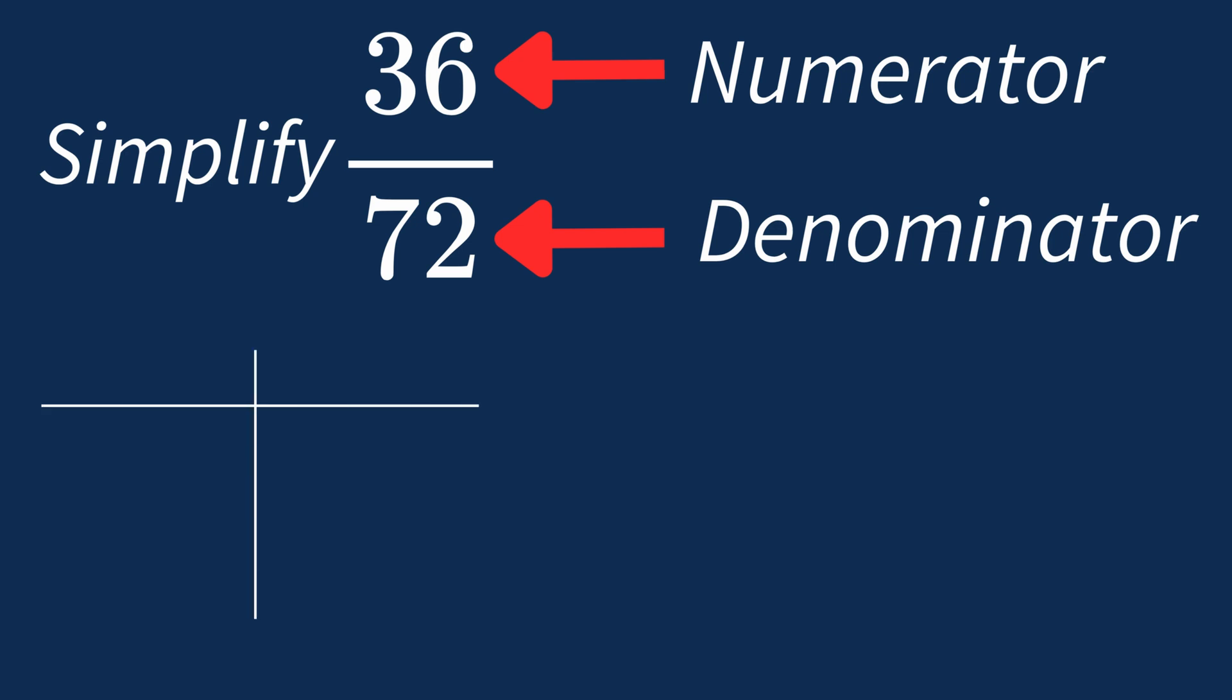First, let's list out the factors for each. For 36, the factors are 1, 2, 3, 4, 6, 9, 12, 18, and 36.